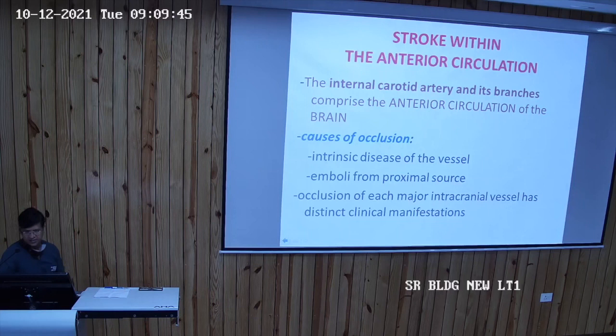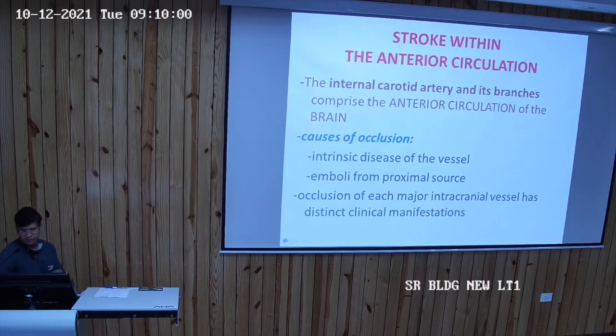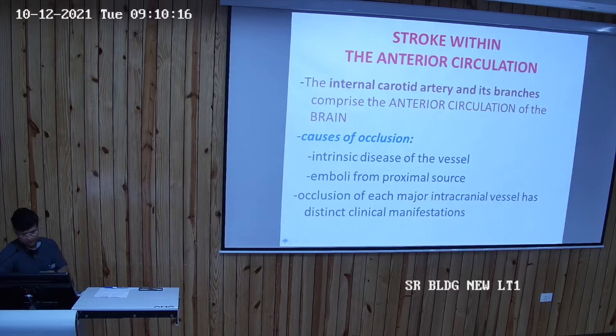In the brain there are three main cerebral arteries: the anterior cerebral artery, middle cerebral artery, and the posterior cerebral artery. Out of these three, the anterior and the middle cerebral artery arise from the internal carotid artery and form the anterior circulation. The occlusion can be due to atherosclerotic disease, embolism, or thrombosis, and occlusion of each major intracranial vessel has a distinct clinical manifestation.